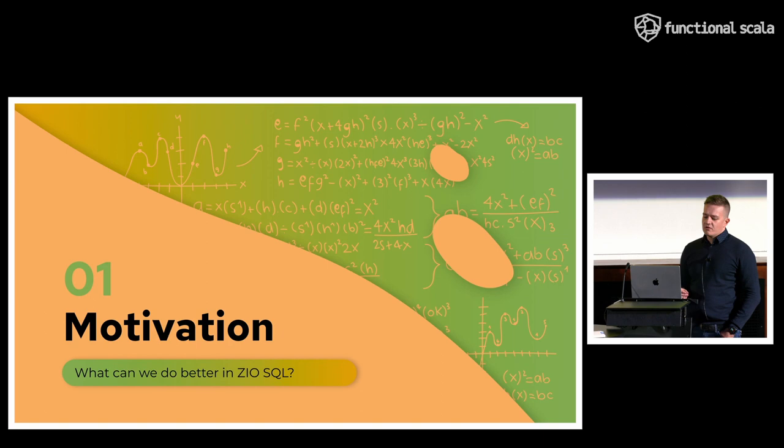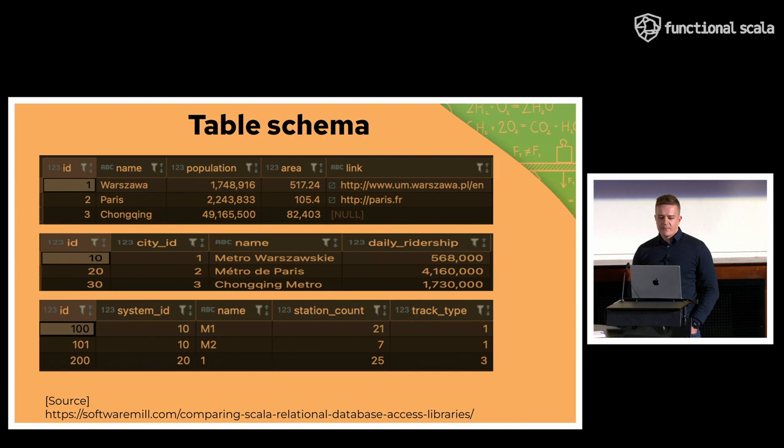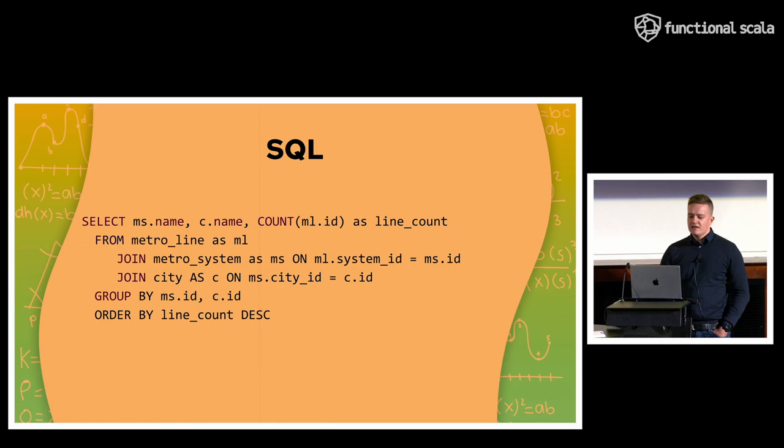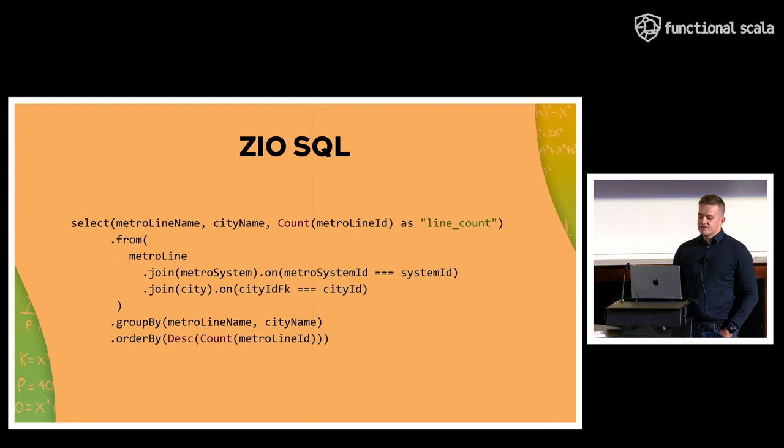So the motivation for this talk came to me as an idea a few months ago when I was writing a blog post about ZioSQL and in the blog post I was working with three tables: city, metro system, and metro lines. And these tables had a one-to-many relationship between them. So I wanted to write a SQL like this. It's a simple query that has an aggregate count function. Basically it aggregates number of metro lines and it shows the city name and metro system name. And it's joined across three tables. So ZioSQL query looks like this. As you can see it looks almost as the SQL. It's also very type safe. If you forget to group by metro line name or city name, it will not compile. So I was pretty happy about this. I think it looks great.